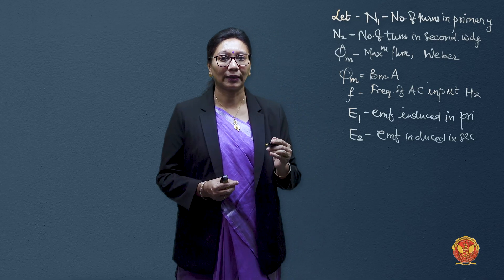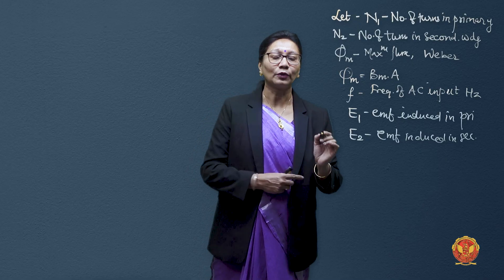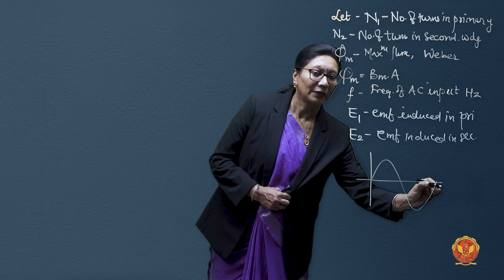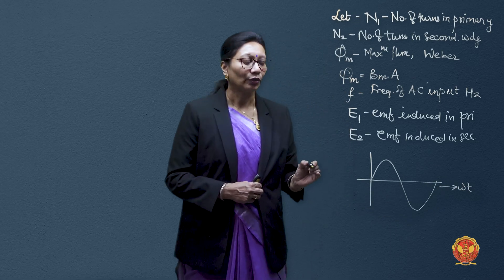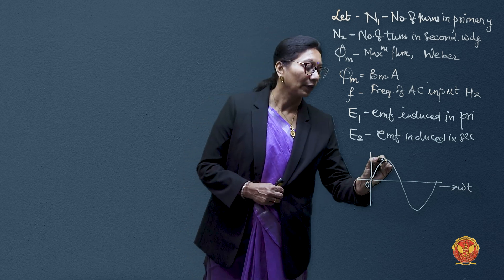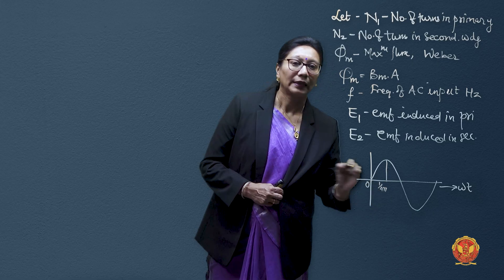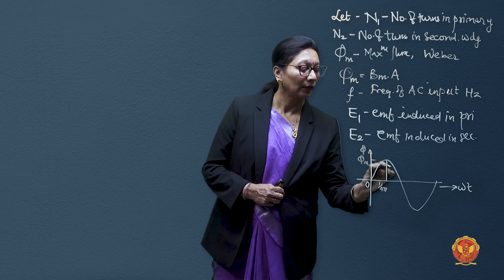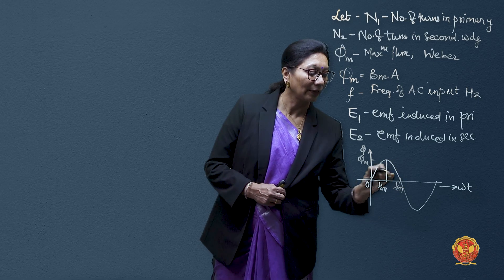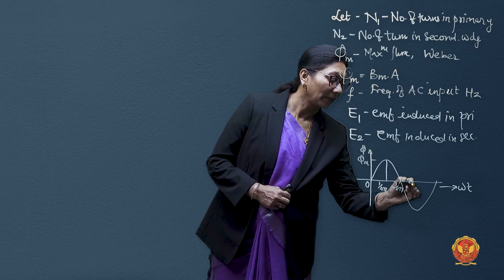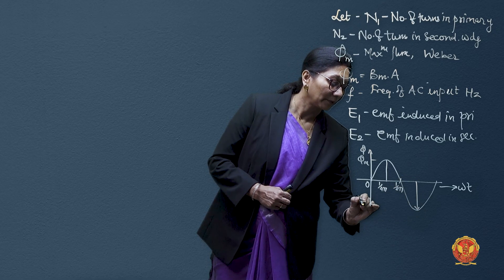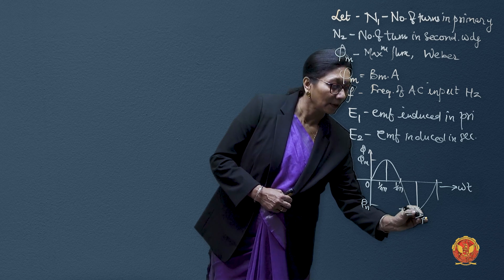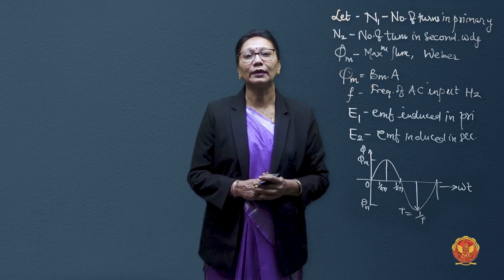If we see the variation of flux, phi is equal to phi m sin omega t, so it varies in a sinusoidal way. Here at t=0, flux is 0. At t = 1/4f, it reaches maximum flux phi m. At t = 1/2f, it is again 0, then at negative maximum it comes to maximum flux phi m, and finally at t = 1/f, flux has completed one sinusoidal cycle.